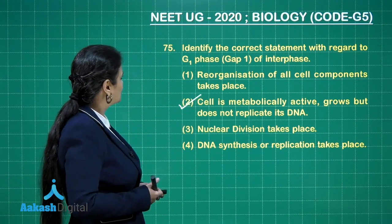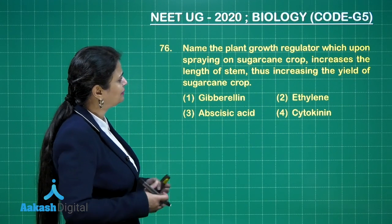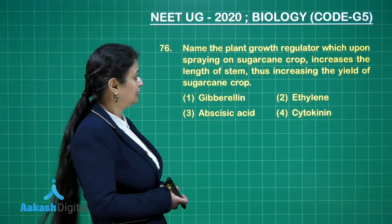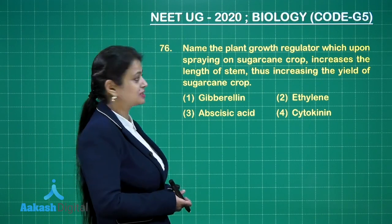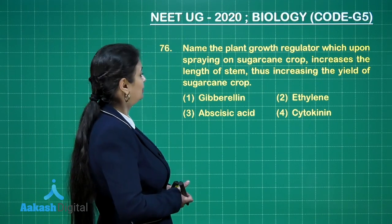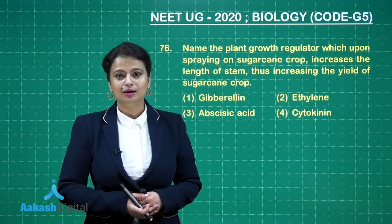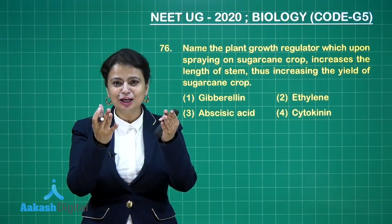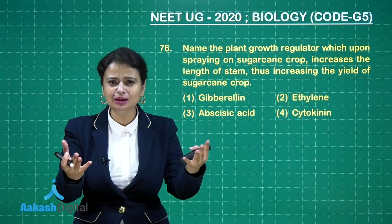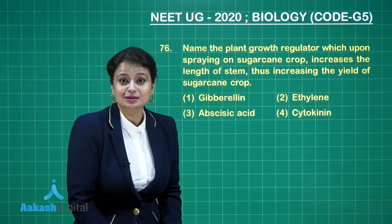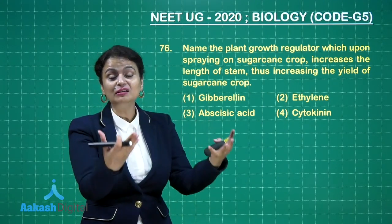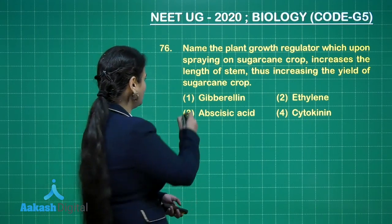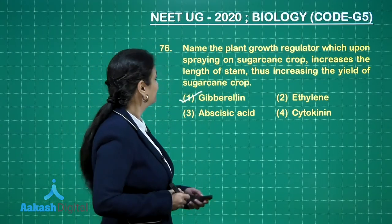Next question: name the plant growth regulator which, upon spraying on sugarcane crop, increases the length of stem, thus increasing the yield of sugarcane. The answer is gibberellin — specifically gibberellic acid. If you want to increase the height and yield of sugarcane, you use gibberellic acid.